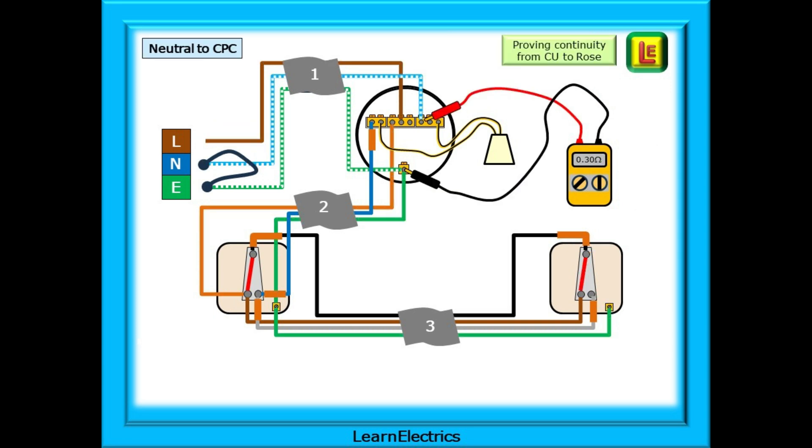And finally the neutral continuity just as before. Move the link at the consumer unit to the ends of the neutral and CPC wires. Test for low ohms at the ceiling rows between the neutral block and the earth terminal.